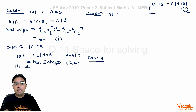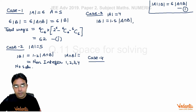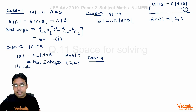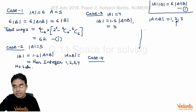Case 3: |A| = 4. From equation 1, |B| = 1.5 · |A ∩ B|. Here |A ∩ B| can be 1, 2, or 3. Only |A ∩ B| = 2 gives an integer value: |B| = 3. So A has 4 elements, B has 3 elements, and their intersection has 2 elements. This case is valid.